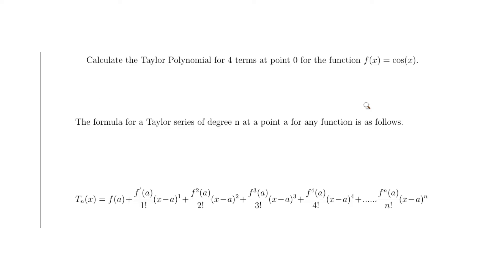Here we have the generic formula for the Taylor polynomial T_n(x): the function value at a, then the first derivative at a over 1 factorial times (x minus a)^1, then the second derivative at a over 2 factorial times (x minus a)^2, and so on — 3 over 3 factorial to the power 3, 4 over 4 factorial to the power 4, all the way up to the nth term over n factorial times (x minus a)^n.